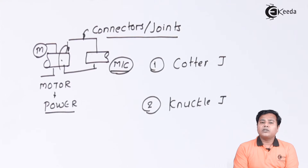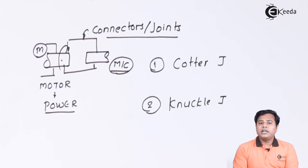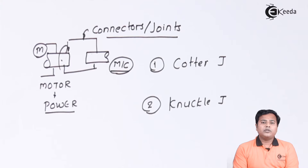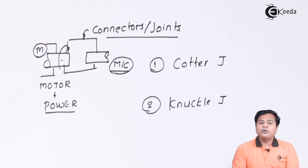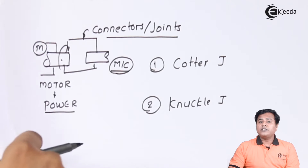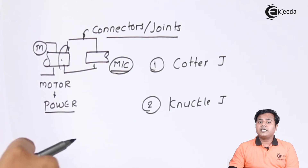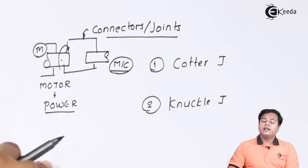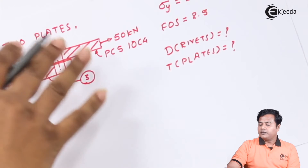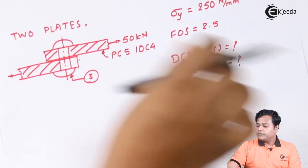Before that, let us learn what a cotter joint is and why it is called a cotter joint — what are its types. But before we start the actual design procedure, let us solve a simple problem that will give you the idea of how to solve problems of parts facing static loads, i.e., design against static loads.